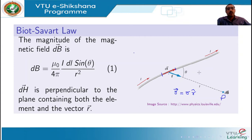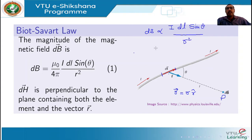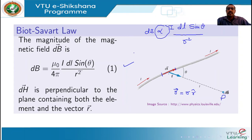R-cap is the unit vector in that direction and DL is the current element. The current element makes an angle theta with respect to the line joining the current element with the point, and I is the current that flows through the element. The magnitude of the magnetic field dB, which is the small magnetic field due to the current element, is proportional to the current I, the length DL, and sin of angle theta, and inversely proportional to the square of the distance R. We can replace the proportionality with a constant, giving dB = (μ₀/4π) · (I·dL·sinθ / R²).